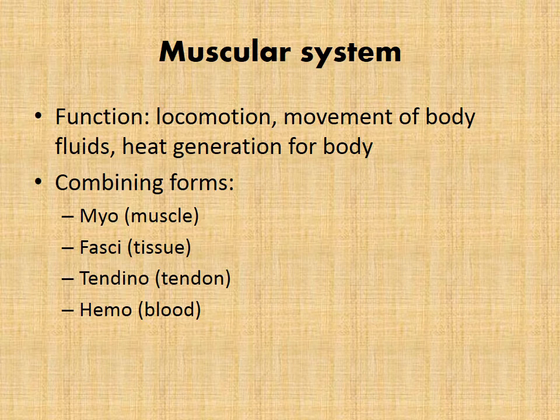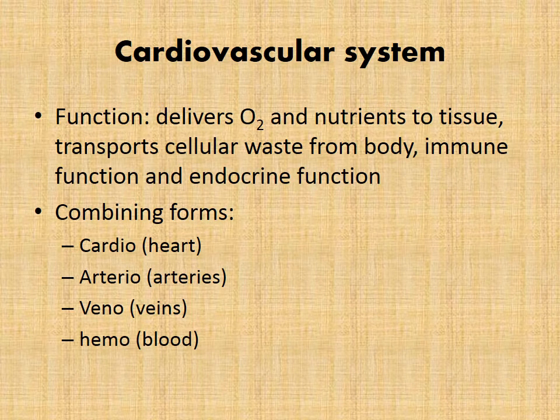The muscular system's function is for locomotion, movement of the body, and heat generation. Combining forms for the muscular system would be myo, which refers to the muscle itself; fasci, which refers to tissue; tendino, which refers to tendon; and hemo, which refers to blood.